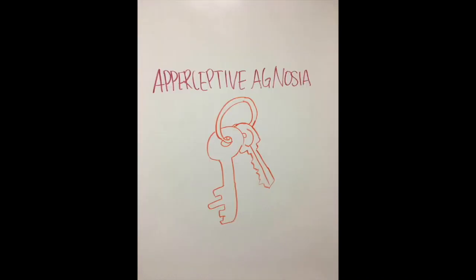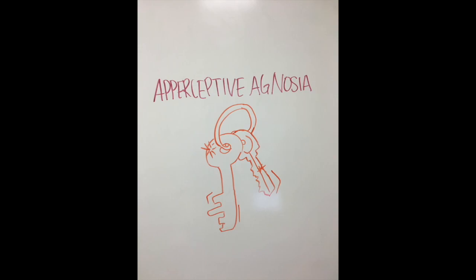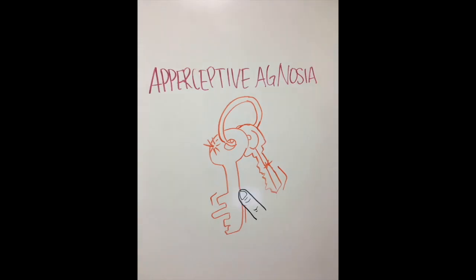Aperceptive agnosia is a condition where the patient has issues with object recognition. For example, if a patient holds up some keys, they may know that they are holding some sort of object that is kind of sharp and shiny, but they would not know what the object is used for or what it's called. Interestingly, if allowed to trace over the object with their fingers, patients can sometimes recognize the keys because they use their tactile or touch system to compensate for the issues with their ventral stream and their vision.